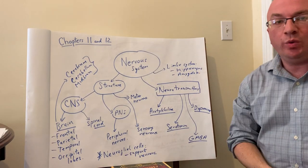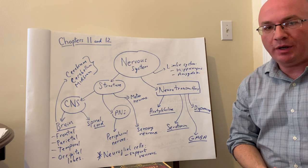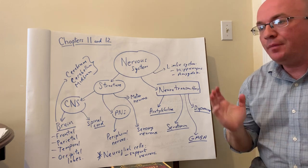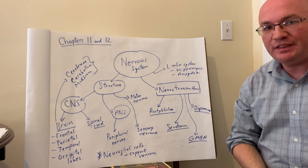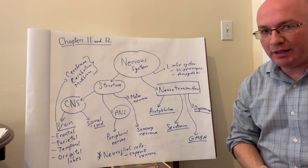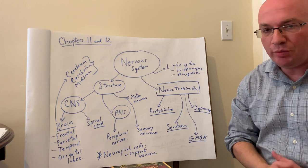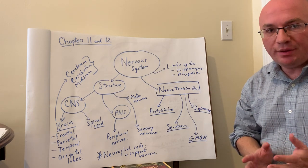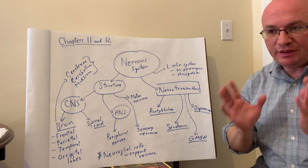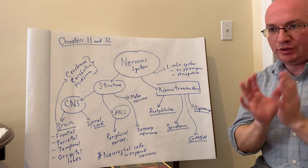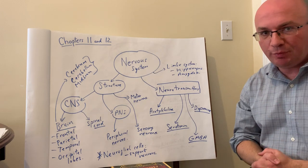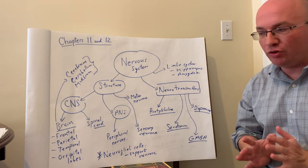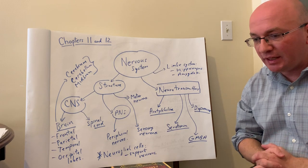Welcome to chapters 11-12 in the human biology textbook. Today we're going to be talking about the nervous system and the sensory mechanisms that go along with it. These are two very big chapters, and as always we're focusing on very specific information here and not everything that the author discusses in the textbook.